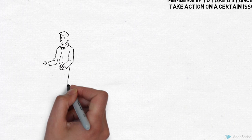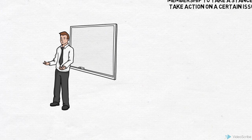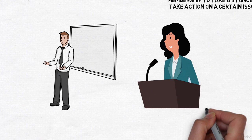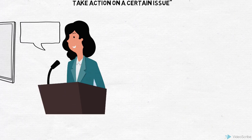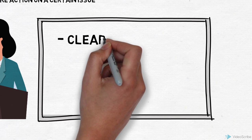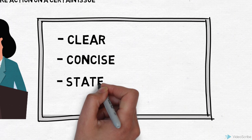To make a motion, you must first obtain the floor. To do so, you must wait for the chairperson to call on you after the last speaker has spoken. When making a motion, ensure that it is clear, concise, and stated in the affirmative.